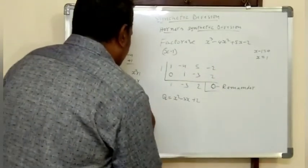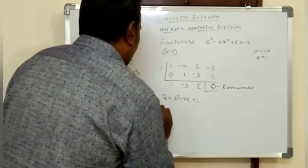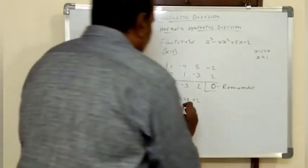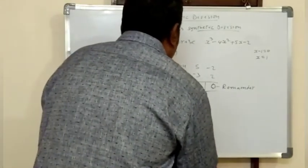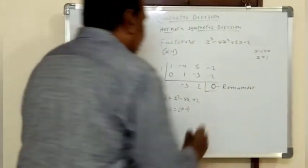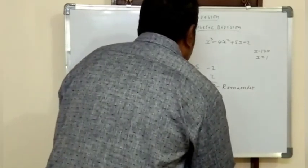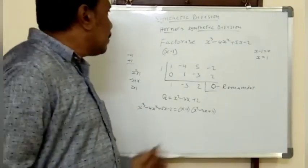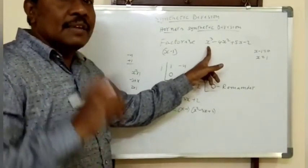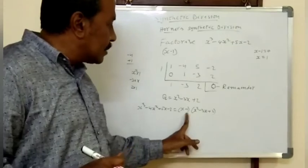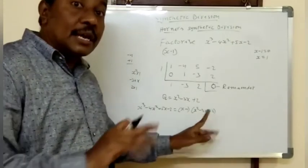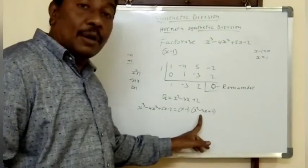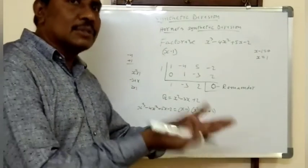So x cubed minus 4x squared plus 5x minus 2 equals x minus 1 times x squared minus 3x plus 2. But the original polynomial has 3 factors, and we have only one so far. So x squared minus 3x plus 2 must be resolved into two more factors.